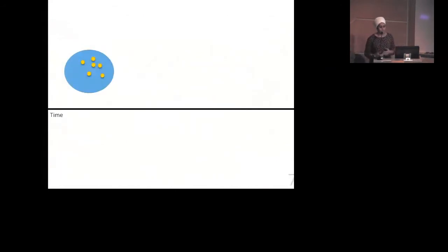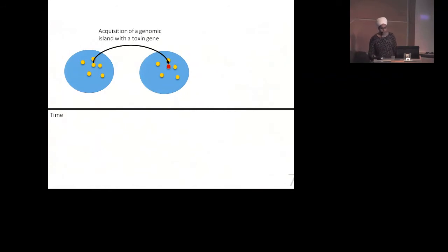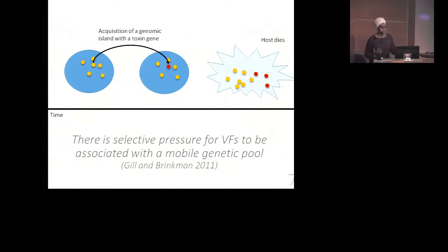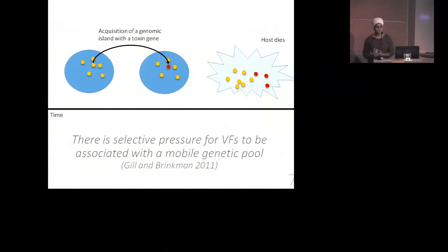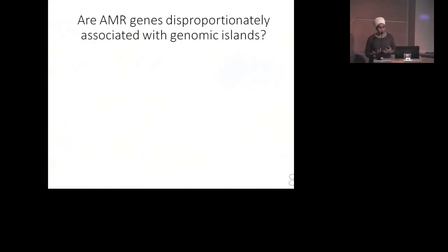In terms of evolution, this makes a lot of sense. If we take an example where we have simple yellow microbes living in a blue host, and one red microbe acquires a genomic island that encodes a toxin gene — a type of virulence factor — as they grow and replicate, the toxin might actually kill the host. So the virulence factor is conferring a disadvantage because the microbes now have to find a new host. The selective pressure is for these virulence factors to be associated with a mobile genetic pool so they can pop in and out of the genome.